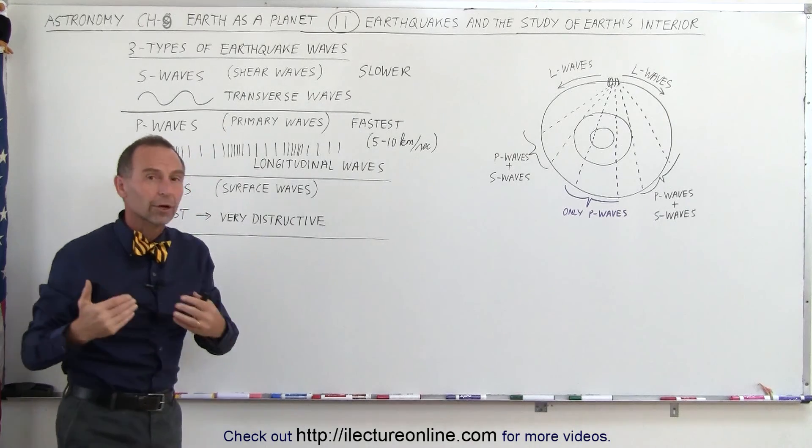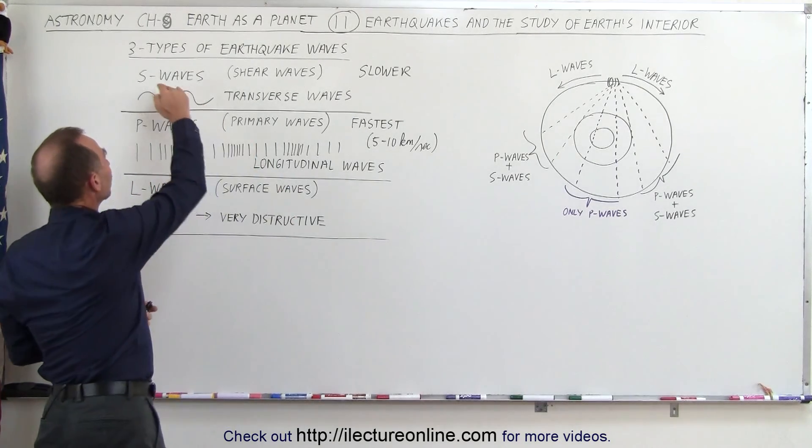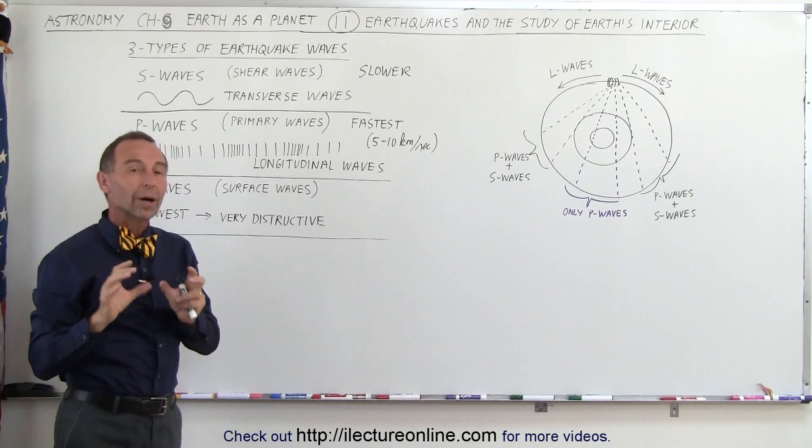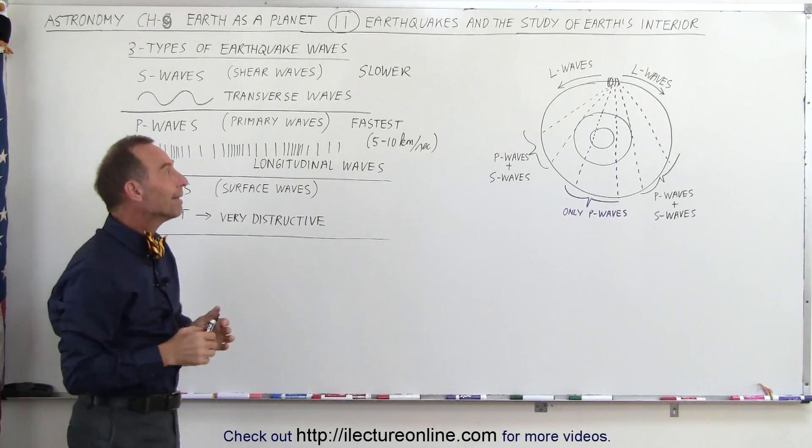But the most important waves for astronomy are the S waves and the P waves as they travel through the Earth, because they tell us a lot about what the structure is like inside the Earth.